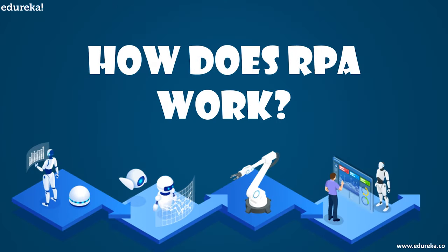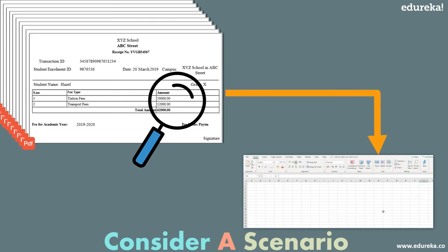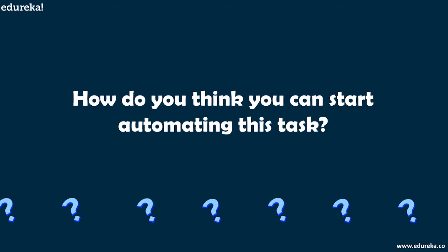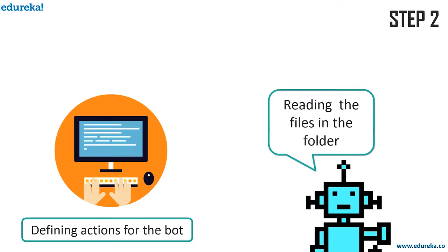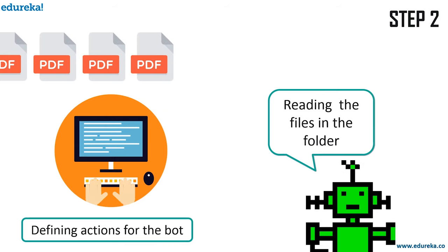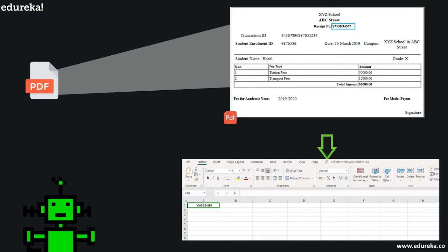Let me show you an example of the RPA process to help you understand how it actually works. Consider a scenario where you have to read hundreds of invoices and extract data from them to store into specific cells of an Excel file. The first step is to locate all the invoices to be processed in a single folder so that the bot can easily access them. Then you define the actions of the bot to read the files from the folder one after the other until all the files are read. Once the bot starts opening the files, it has to extract specific data values and store them into an Excel file.